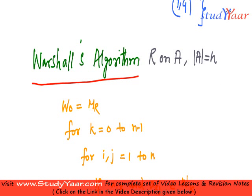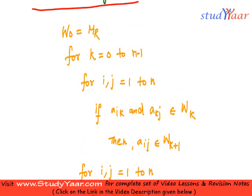Now let's talk about an algorithm that helps us to find the transitive closure of a relation R easily. It is known as Warshall's algorithm and it proceeds as follows.